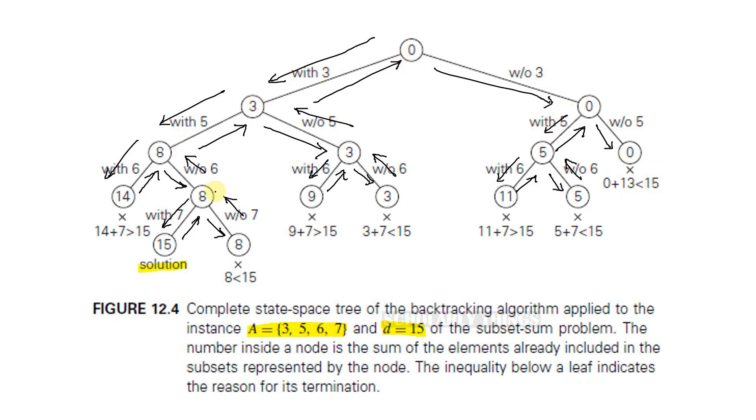This path we found before was the legitimate solution. The solution subset is 3, 5, 7. 3 plus 5 plus 7 is equal to 15, which is exactly equal to d.